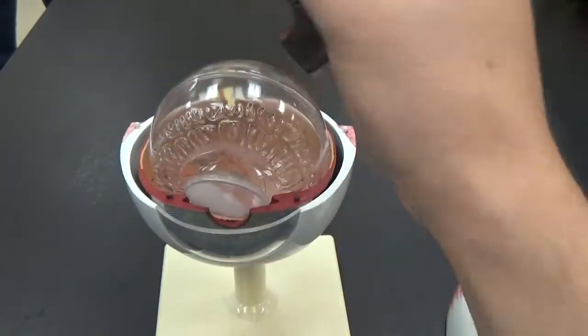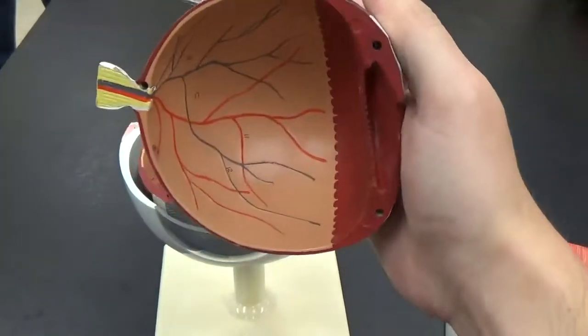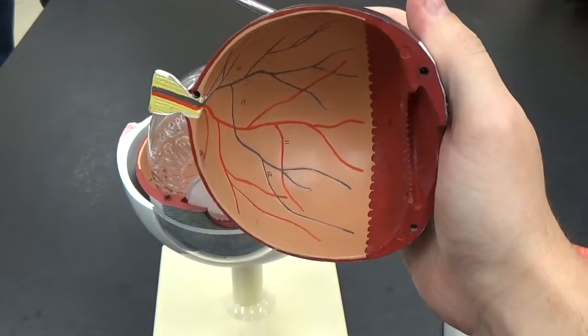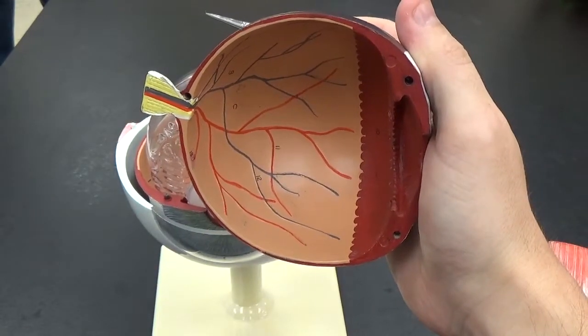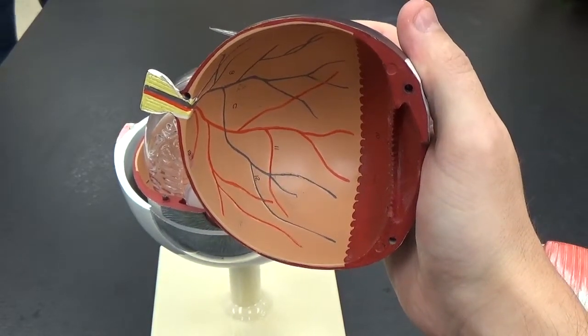We remove that, and on the inside you have your retina. That's the lighter layer there that's got all the nerve tissue associated with it.